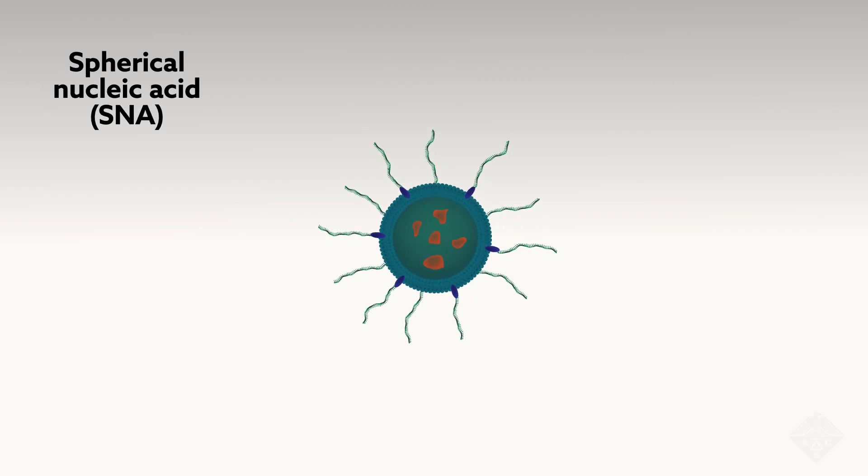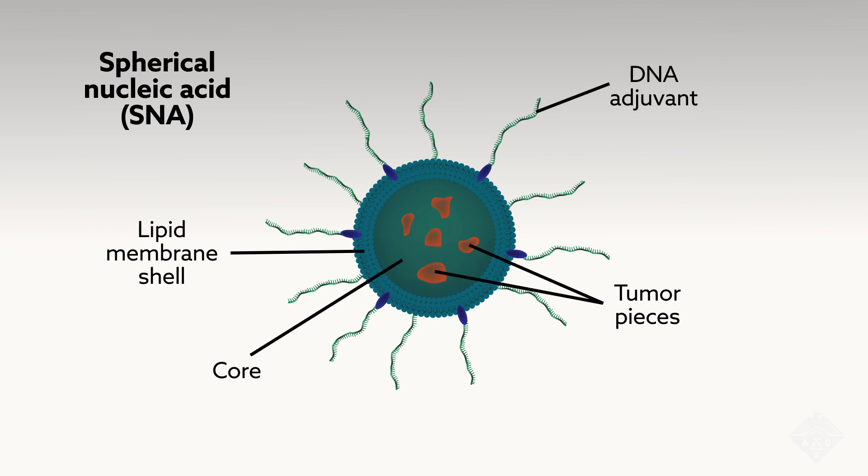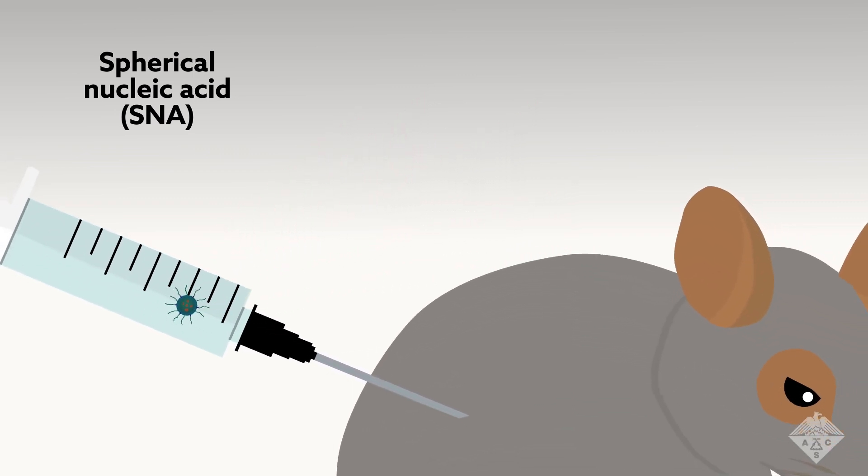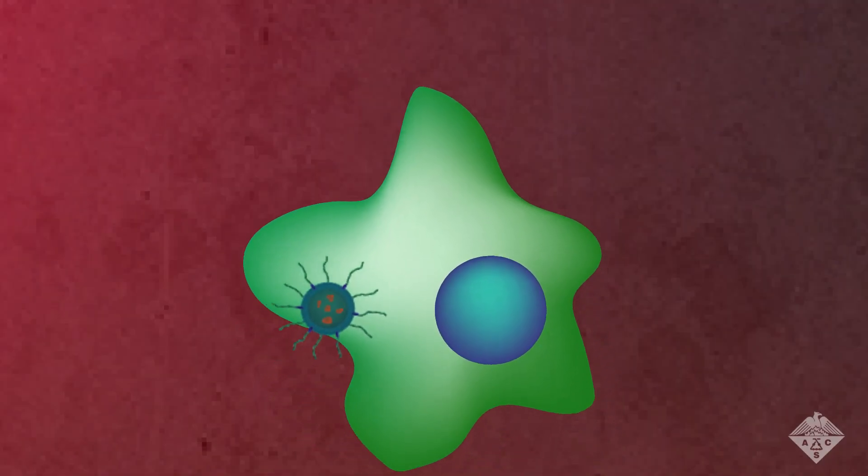In this case, the team packaged the two components in the core of a spherical nucleic acid, or SNA—a globular nanoscale form of DNA that makes it easier to enter and stimulate immune cells. When injected under the skin of mice, the SNAs traveled to the lymph nodes.